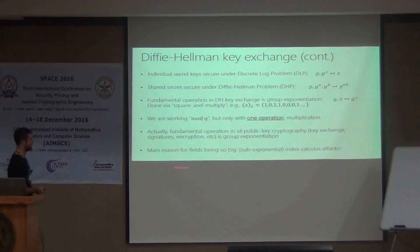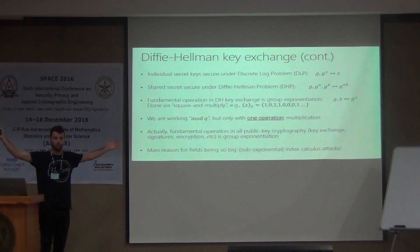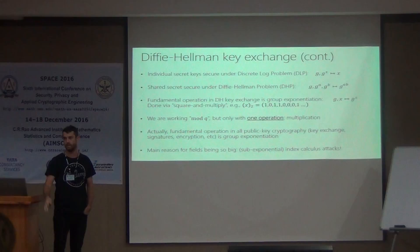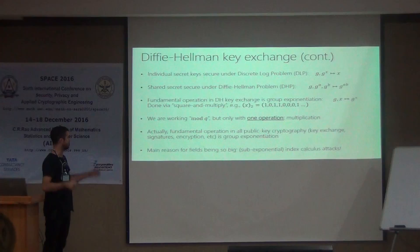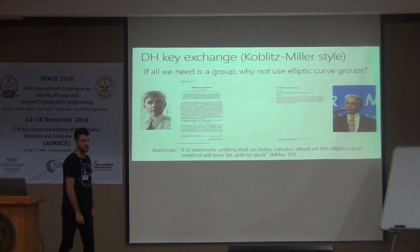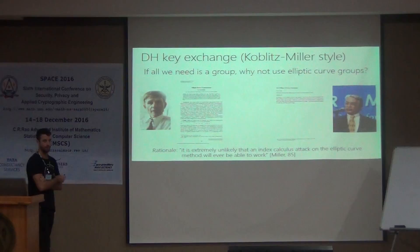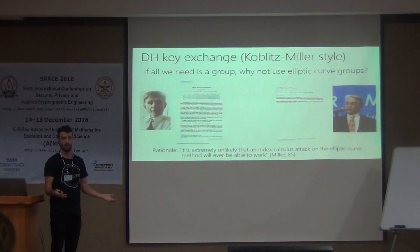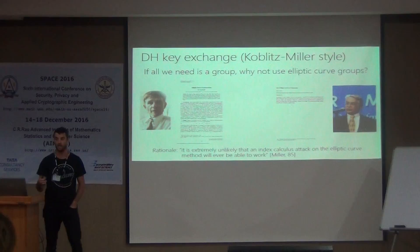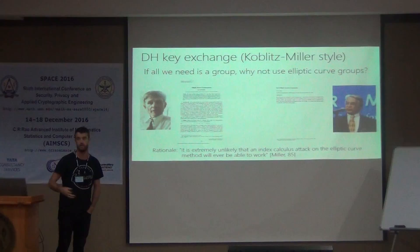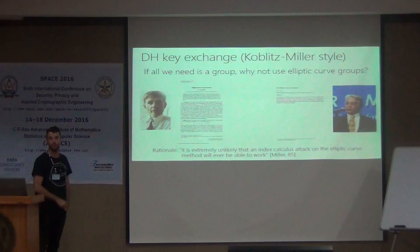The main reason finite fields have to be so big nowadays is that attacks on these things have become a lot better since they were proposed. Index calculus is quite a powerful tool to attack the problem — it runs in sub-exponential time, which is why these parameters have to be so large. About ten years after Diffie and Hellman proposed public key cryptography using the discrete log problem, Koblitz and Miller independently observed that all we really need is a group — a finite set with one operation with a hard discrete log problem — and if we have that, we can do discrete-log-based cryptography.